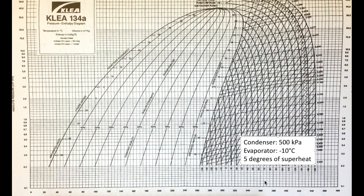To draw that diagram, we need some information first. We need either temperature or pressure, and we need to know if our system is ideal or not. If it's not ideal, we need to know how much subcool or superheat, or both, we have in the system. For this problem, we have a condenser running at 500 kilopascals, an evaporator running at minus 10°C, and five degrees of superheat. That superheat information goes at the end of the evaporator; subcool would go in the condenser. The compressor and expansion valve are not involved with superheat or subcool.